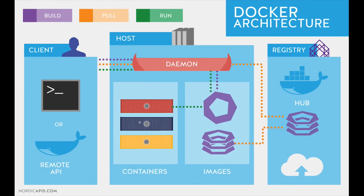Kubernetes was created by Google and is the default solution for automating application deployment, scaling, and management. It is open source and provides key features out of the box. Similarly, AKS is a managed Kubernetes container service — these are managed services provided by Azure, GCP, or AWS. Kubernetes is an orchestration tool that is now being offered as a managed service through different cloud providers.